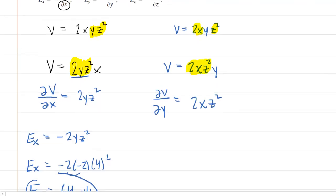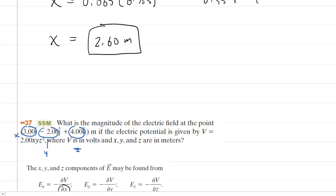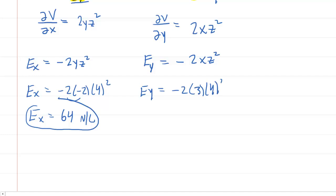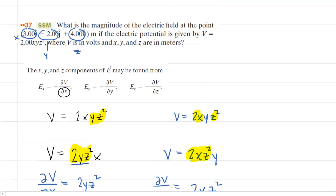And then again, the electric field y component is equal to negative of that partial derivative. So now all we have to do is again plug in the given x and z coordinates. x was 3, z was 4. So you end up with negative 6 multiplied by 16. So this should come out to negative 96 newtons per coulomb. So this would be the y component of the electric field. Let's finish this off and get the z component.